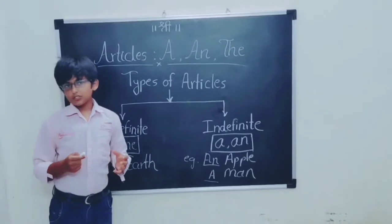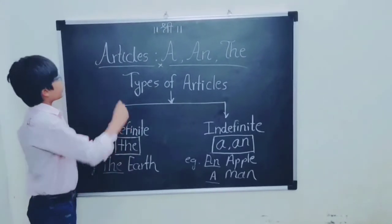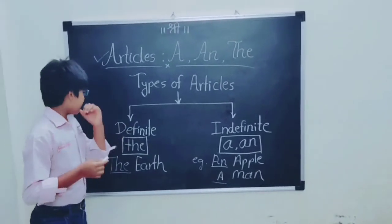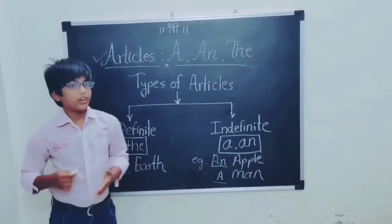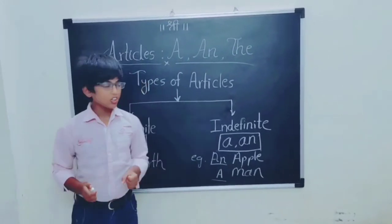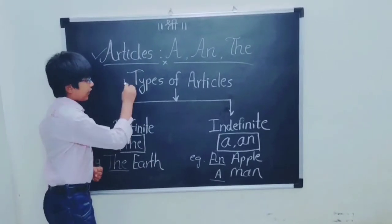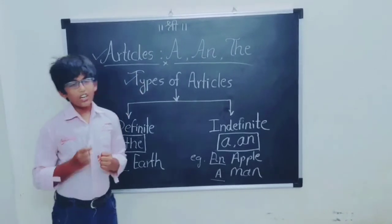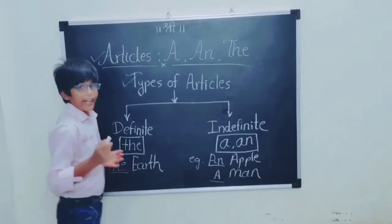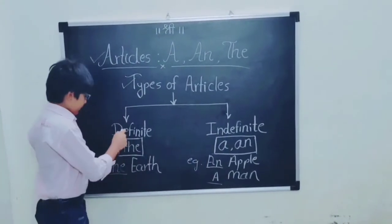Now we should know what articles are. As I told you, articles tell us whether a word is definite or indefinite. So now we learn the types of articles. There are two types of articles: definite and indefinite.